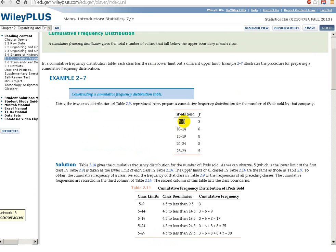How many days did they sell between 5 and 9? 3 days. How many days did they sell between 10 and 14? 6 days. How many days did they sell between 15 and 19? 8 days. And so on, 25 to 29, 5 days.